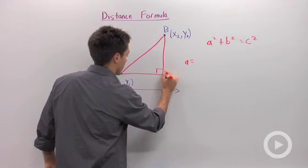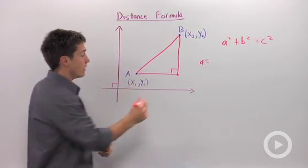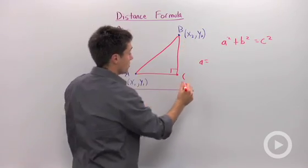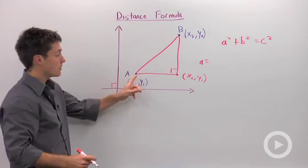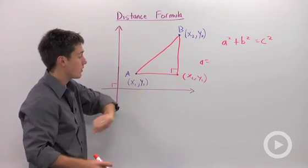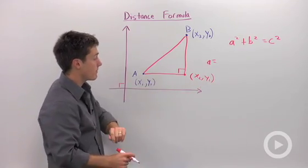Well, this point right here is going to be the point, not X1, but it's going to be (X2, Y1). Because notice, the only thing that's changed from A to this corner is my value of X. If these two lines are parallel, then Y1 will stay the same.